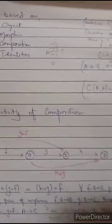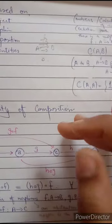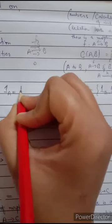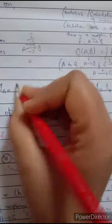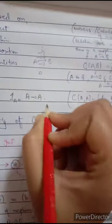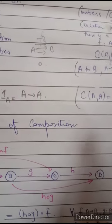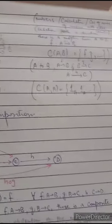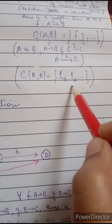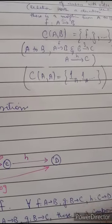Identities: an identity is a morphism that maps an object to itself — from A to A. It means an object can map to itself. So for a category, the identity on A is written 1A. Because there can be a lot of mappings, each object gets its own identity map.